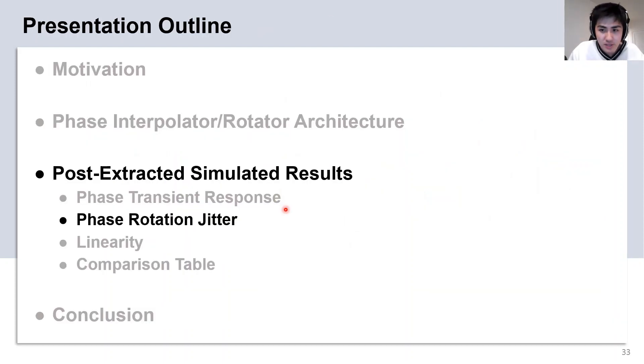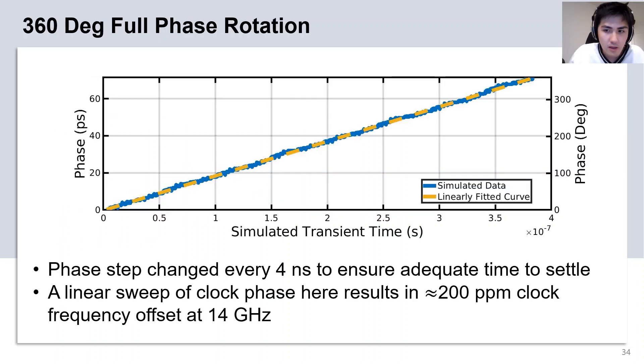Next, I would like to discuss the phase rotation jitter of the PI. Here we show a full 360 degrees phase rotation over all 96 phase codes. Each phase is stepped every 4 nanoseconds to ensure adequate time to settle. This linear sweep of the clock results in an approximately 200 ppm of frequency offset at 14 gigahertz.